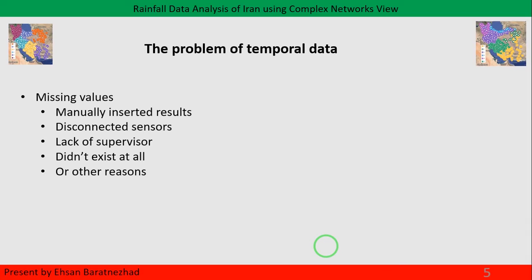One of the main issues with temporal data is missing values. In the past, people tended to write records on paper and it was easy to lose them. Sometimes they faced sensor malfunctions, or sometimes stations were built later than others. That's why in this kind of temporal data there's a good chance we face missing values.